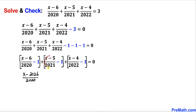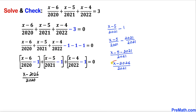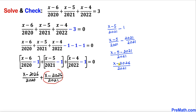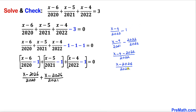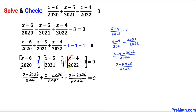Now let's focus on the next bracket. I've copied it down and it simplifies to (x minus 2026) divided by 2021. I replace that whole bracket with this simplified fraction. Finally, the third bracket simplifies to (x minus 2026) divided by 2022, and I replace it with this simplified form.